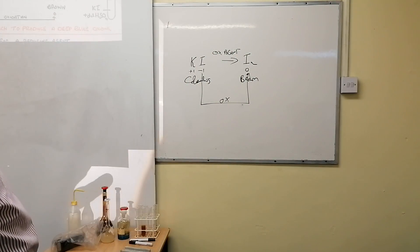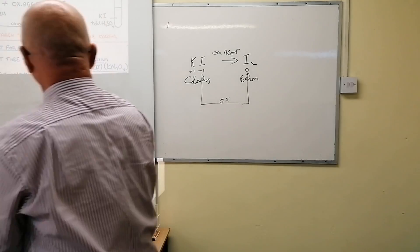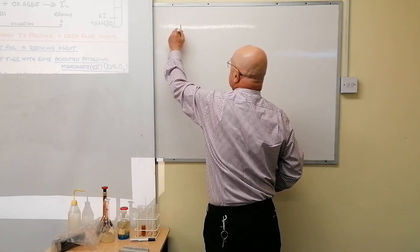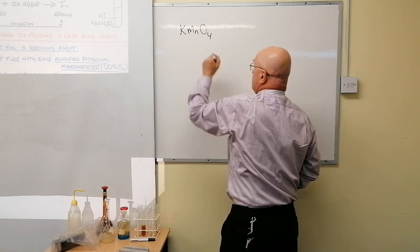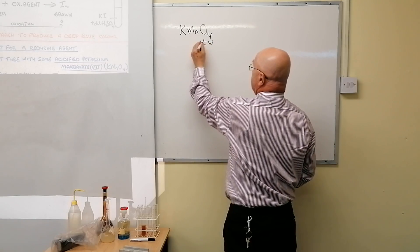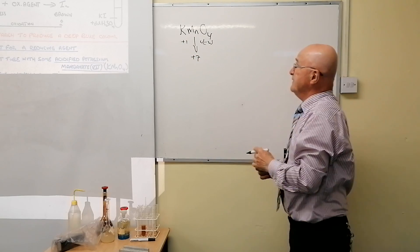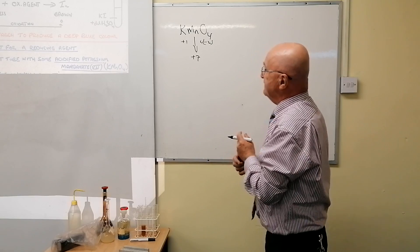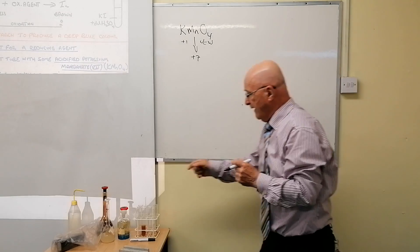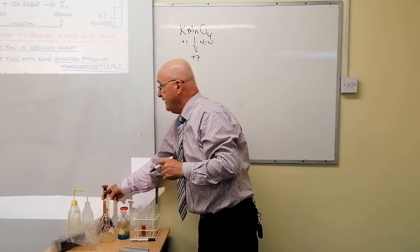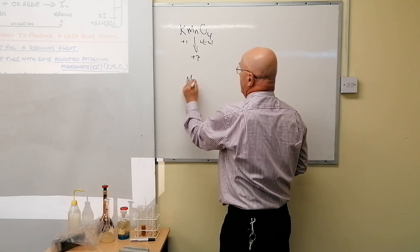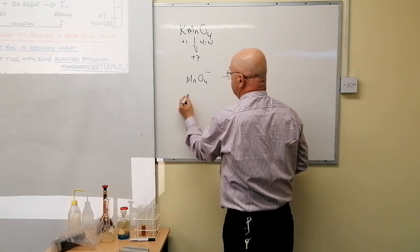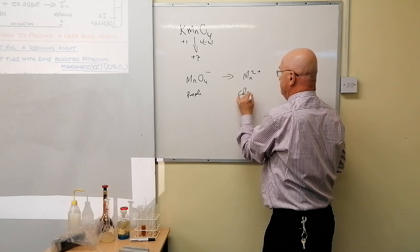Now the test for a reducing agent. You take acidified KMnO₄ — potassium manganate 7. Assigning oxidation numbers: oxygen is minus two (four times), potassium is plus one, so manganese is plus seven — hence potassium manganate 7. This is a purple solution. Acidify it with sulfuric acid. The manganese goes from MnO₄⁻ to Mn²⁺ — from plus seven to plus two — which is reduction. What you'll see is the purple turns colorless.